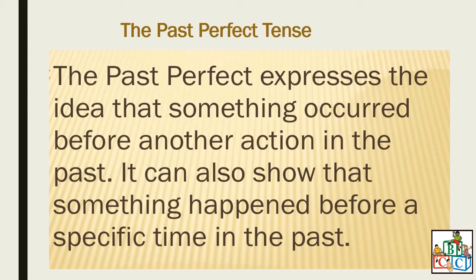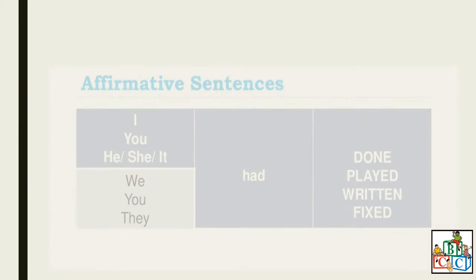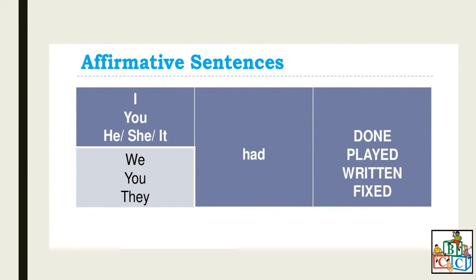You are going to copy all of these into your copybook. Now, affirmative and negative sentences. For I, you, he, she, it, we, they — you are going to use 'had.' Plus the verb in past participle, such as: done, played, returned, fixed.